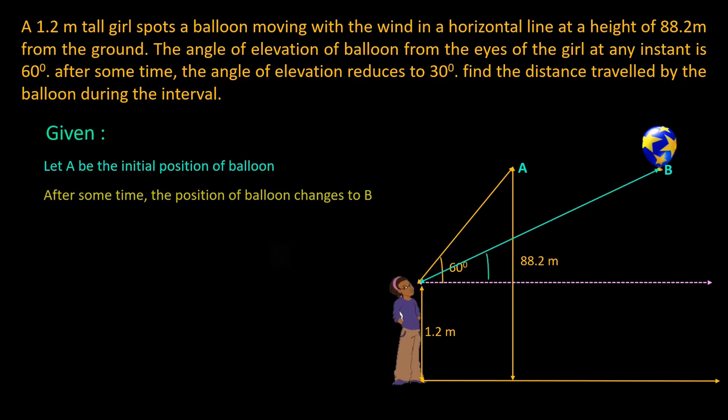When the balloon moves from A to B, the angle of elevation reduces from 60 degree to 30 degree. This is given in the problem. And we know that since the balloon moves horizontally, the height remains same.